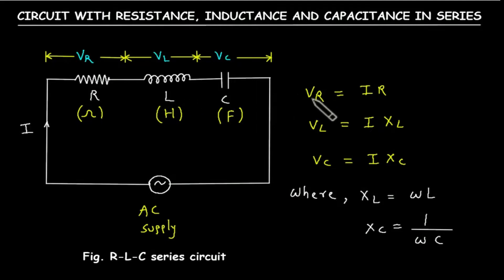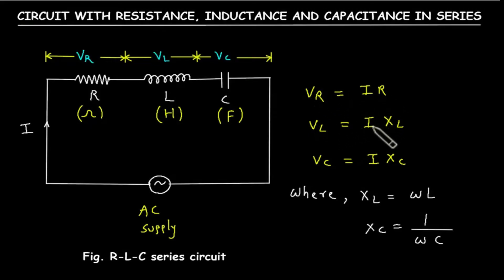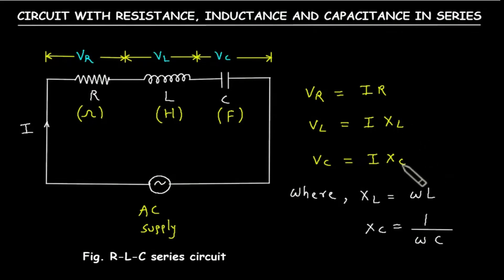Vr is equal to I into R. According to Ohm's law, voltage is equal to current into resistance. Vl is equal to I into XL, and Vc is equal to I into Xc. XL is the inductive reactance and Xc is the capacitive reactance. XL is equal to omega L and Xc is equal to 1 upon omega C, where omega is the angular frequency.